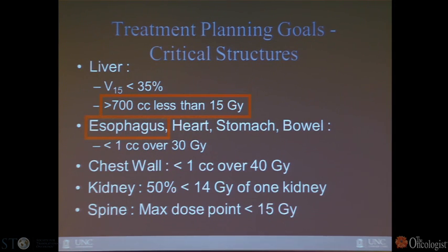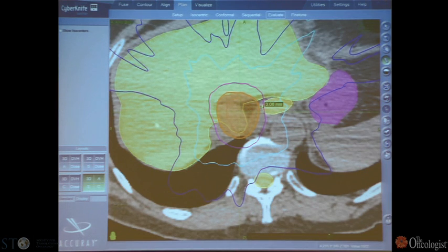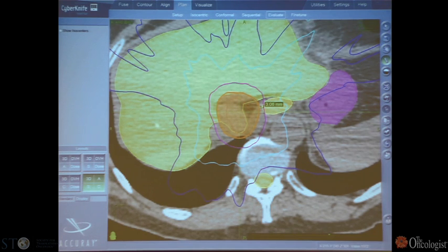We define what the normal liver can tolerate using parameters such as what volume of the liver receives a certain dose. We want at least 700 cc's to receive less than 15 gray of radiation, and we are cognizant of the tolerance of the esophagus, heart, stomach, and bowel that can be nearby. This slide shows a radiation dose distribution where the tumor is in a central area — a very high-dose area is treated there, but the peripheral liver gets relatively low dose, allowing this treatment to be tolerated.